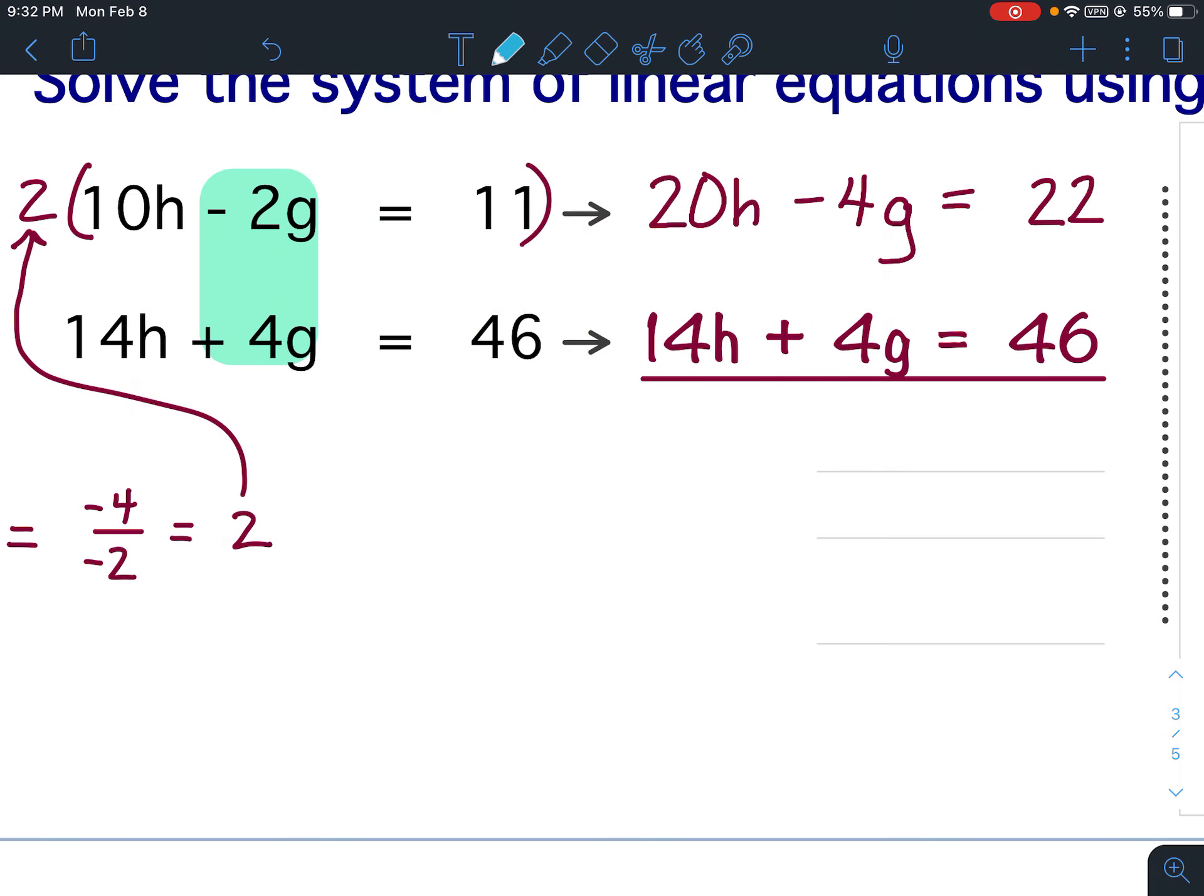What cancels? What are opposites? The g terms are opposites. So the g's will eliminate. So 20h plus 14h, 20 plus 14 is 34. So that would be 34h. 22 plus 46 would be 68.